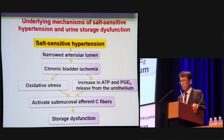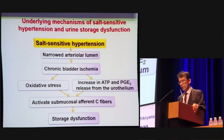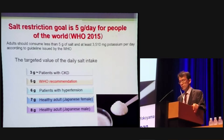As is known, increased ATP and PGE2 release from the urothelium stimulates afferent C-fibers and results in storage dysfunction. Therefore, in patients with salt-sensitive hypertension, high blood pressure induces narrowed arterial lumen and chronic bladder ischemia. Increased ATP and PGE2 release from the urothelium activates submucosal afferent C-fibers, and storage dysfunction may occur.